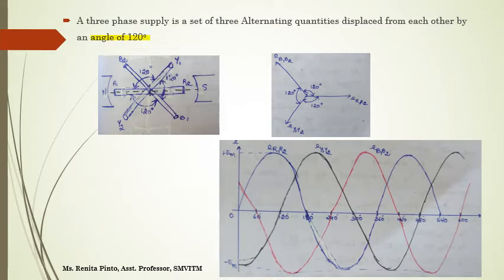Three-phase voltages can be generated by placing three rectangular coils. As you can see in this figure, you have these three rectangular coils displaced in space by 120 degrees. You can see here three coils: R1-R2 is one coil, Y1-Y2 is another coil, B1-B2 is another coil. From R1 to Y1, it is 120 degrees.